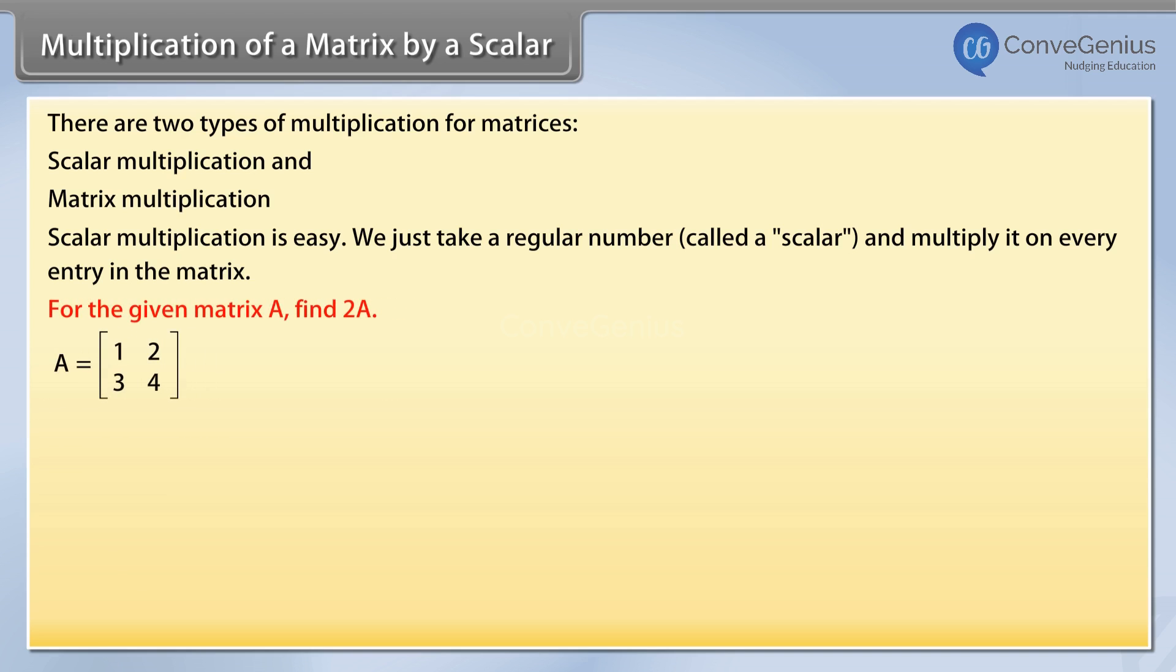For the given matrix A, find 2A. To do the first scalar multiplication to find 2A, we just multiply a 2 on every entry in the matrix.